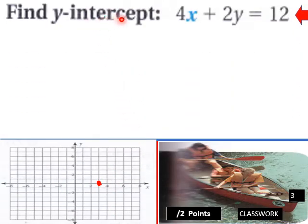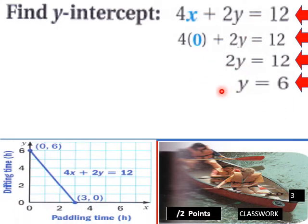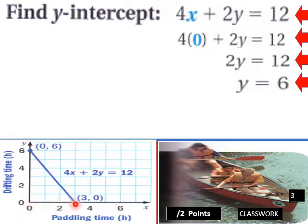To find the y-intercept, make x equal 0. So 4 times 0 plus 2y equals 12, giving us 2y equals 12, and the y-intercept equals 6. So when x equals 0, y equals 6, and when y equals 0, x equals 3.